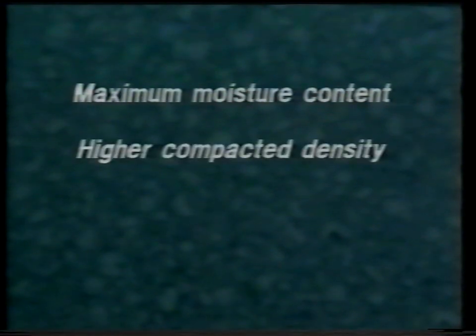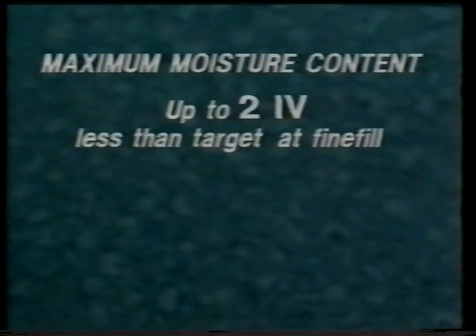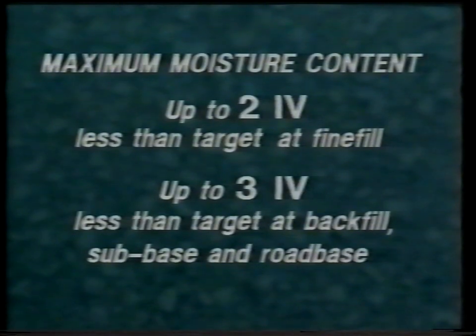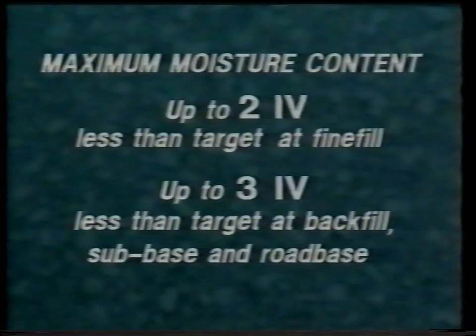Where materials are compacted near the maximum acceptable moisture content, it is likely that a slightly higher compacted density will be achieved along with a small reduction in material stiffness. This will often be reflected by a Clegg reading up to 2 IV less than target value for the fine fill layer, and up to 3 IV at backfill, sub-base and road-base. These lower Clegg values are acceptable only under these circumstances, as long as the operator is satisfied that all the Clegg readings are consistent and compare well with what has been observed on site.